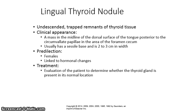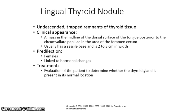A lingual thyroid nodule consists of undescended, trapped remnants of thyroid tissue. Clinically, they appear as a mass in the midline of the dorsal surface of the tongue, posterior to the circumvallate papillae, in the area of the foramen cecum. It usually has a sessile base and is 2 to 3 cm in width. Its predilection is for females and is linked to hormonal changes. Treatment includes evaluation to determine whether the thyroid gland is present in its normal location.